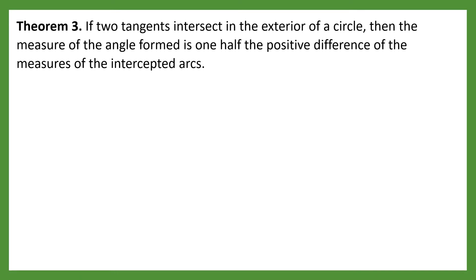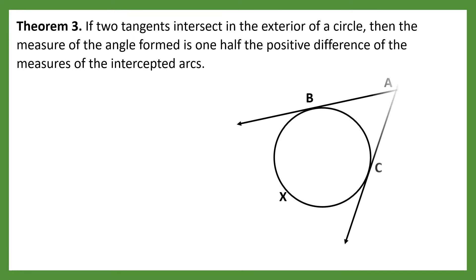Then we have Theorem number 3. If two tangents intersect in the exterior of a circle, then the measure of the angle formed is one half the positive difference of the measures of the intercepted arcs. So if there are two tangents, we have line BA and line BC, and they form an angle which is angle BAC.